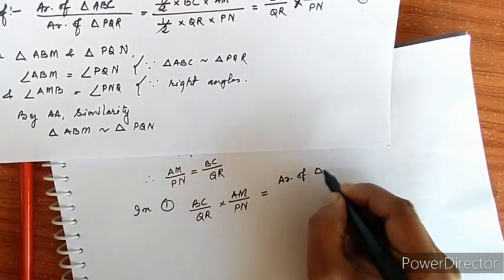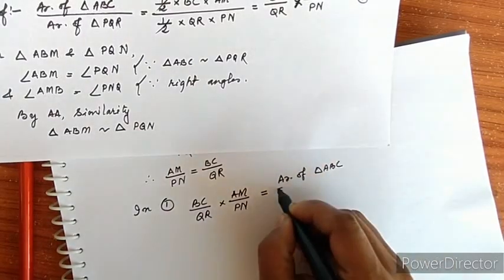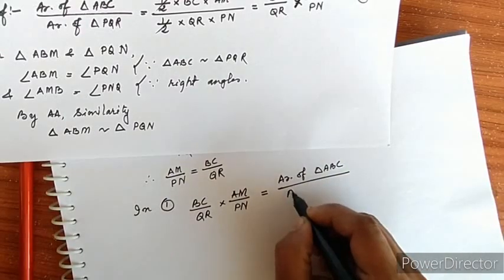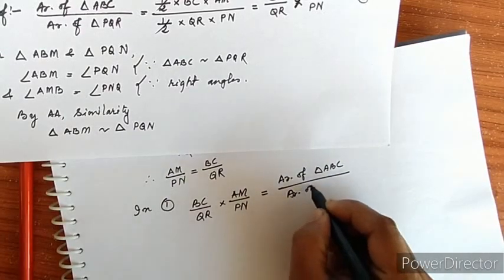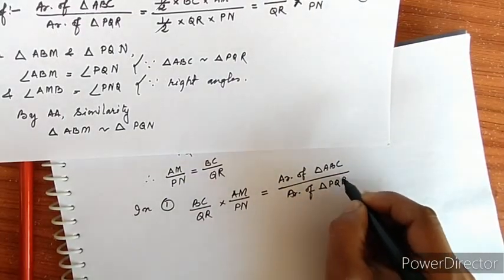Therefore, area of triangle ABC by area of triangle PQR